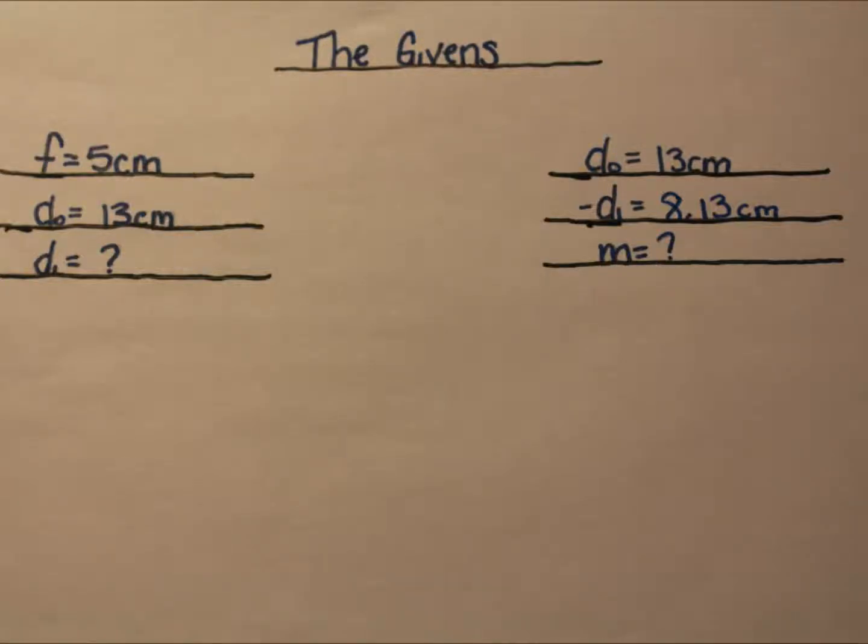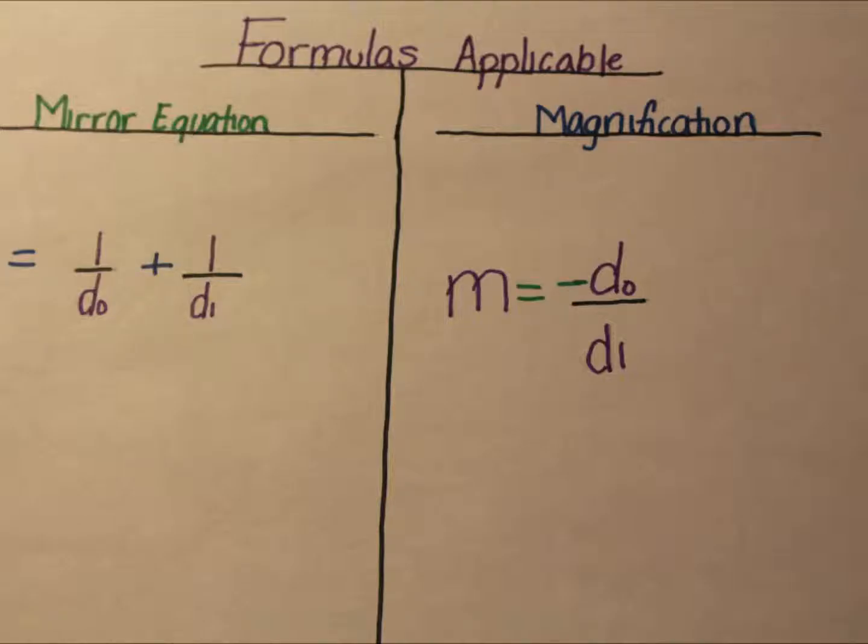These are the givens that we are able to find in the problem. The variables that we have to solve for are the distance of the image and the magnification. These are the equations that we will be using for the problem.